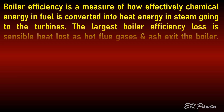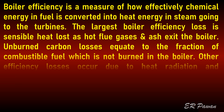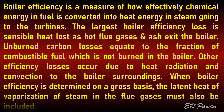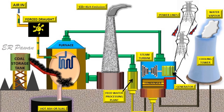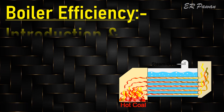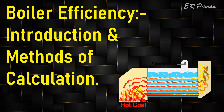Unburned carbon losses equate to the fraction of combustible fuel which is not burned in the boiler. Other efficiency losses occur due to heat radiation and convection to the boiler surroundings. When boiler efficiency is determined on a gross basis, the latent heat of vaporization of steam in the flue gases must also be included. Boiler efficiency: introduction and methods of calculation.